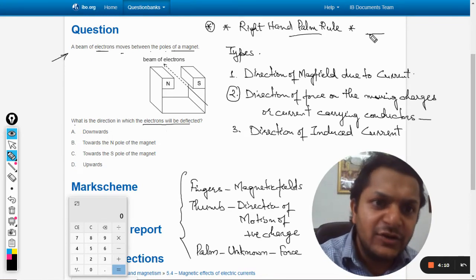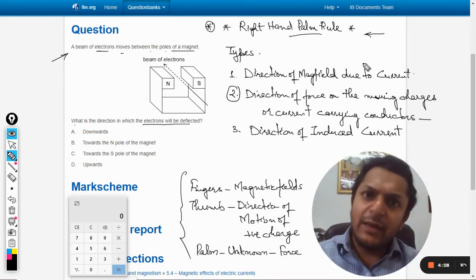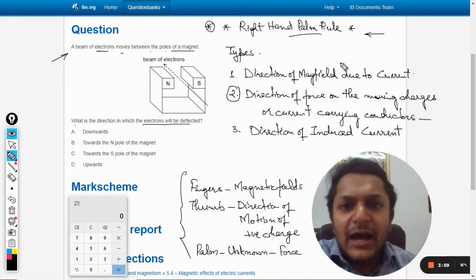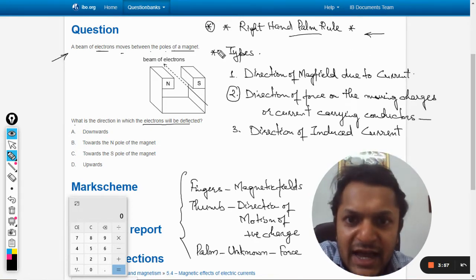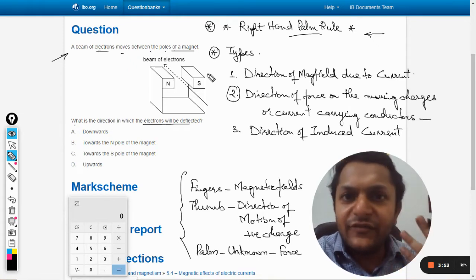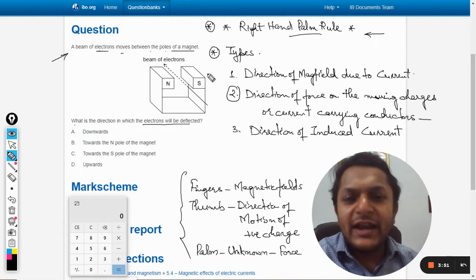This is a very easy rule instead of Fleming's hand rules. You can search these things on Google and learn more about right hand palm rule which is very easy comparatively. Here I'm just going to explain that this rule is used in three different types.